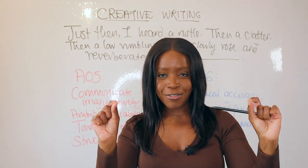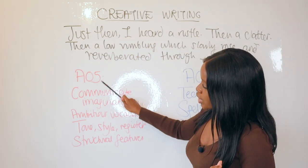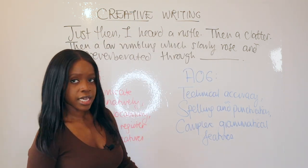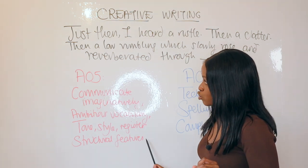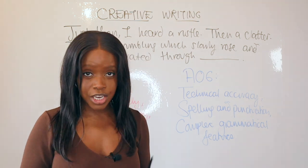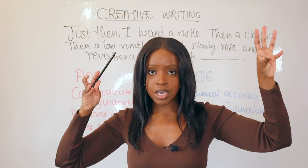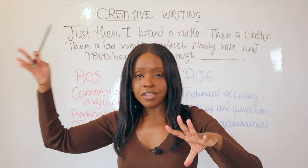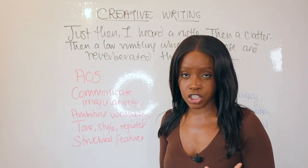Let me explain why this is the perfect sentence starter for your problem paragraph. In creative writing, you're tested on AO5 and AO6. AO5 tests your ability to communicate imaginatively, use ambitious vocabulary, and demonstrate good tone, style, register, and powerful structural features. This phrase communicates imaginatively — it's a vivid description of sounds, whether from a villain, an animal, or something causing problems in your problem paragraph. It's gripping your reader.